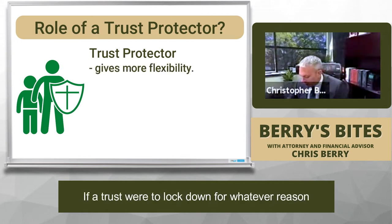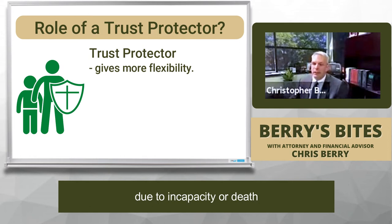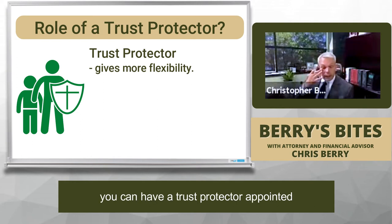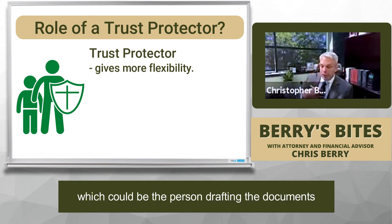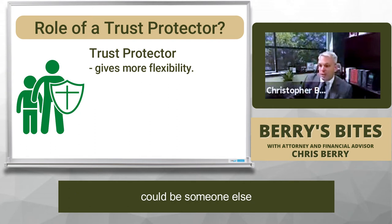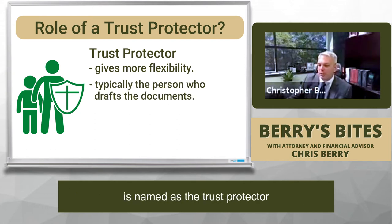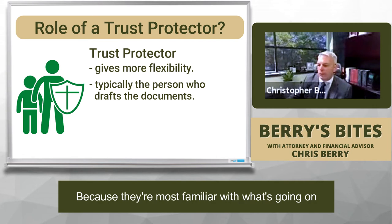If a trust were to lock down for whatever reason due to incapacity or death, and there's some type of change that should be made, you can have a trust protector appointed — which could be the person drafting the documents or could be someone else — but typically it's the person who drafts the documents, because they're most familiar with what's going on.